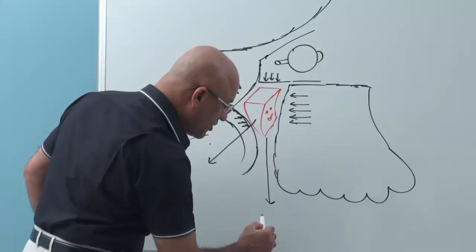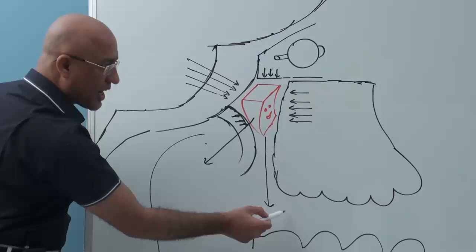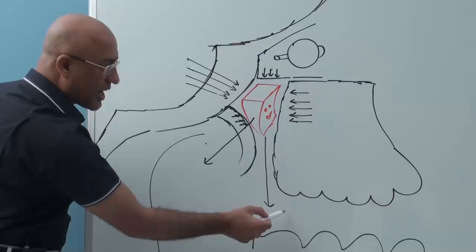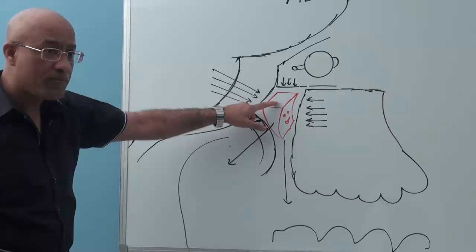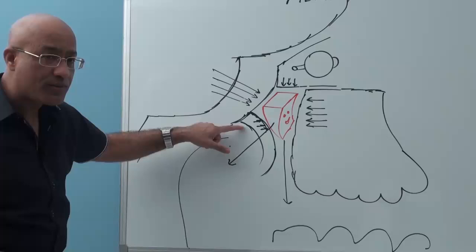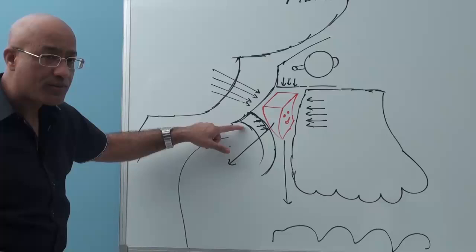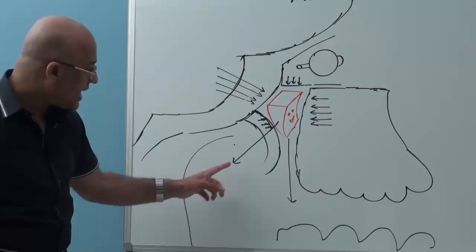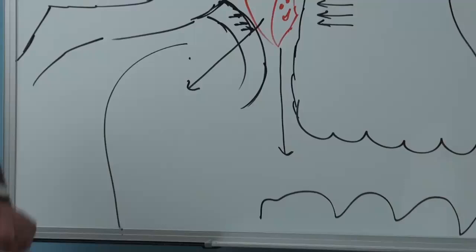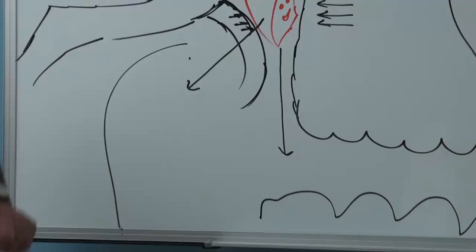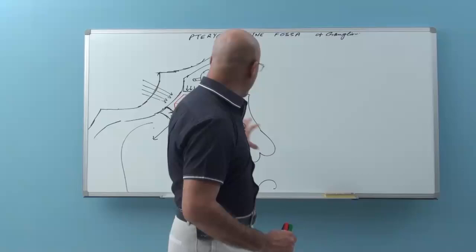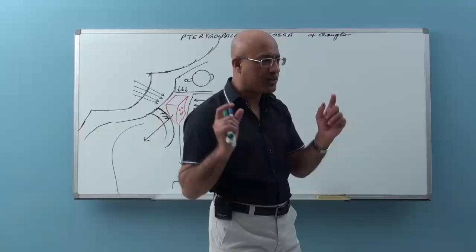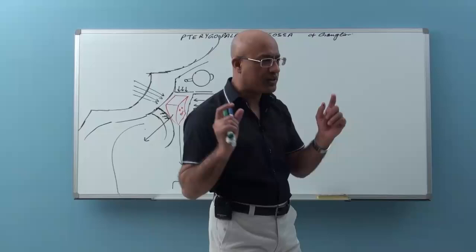If you go purely inferior, this is the oral cavity. So important relationships: above it has the apex of the orbit, in front it has the maxilla, at the postero-superior angle it has the middle cranial fossa, behind it has the pterygoid process. Postero-inferiorly it is directed towards the nasopharynx, and going purely below you end up in the oral cavity. It also has very important relationships with the nose and the infratemporal fossa.